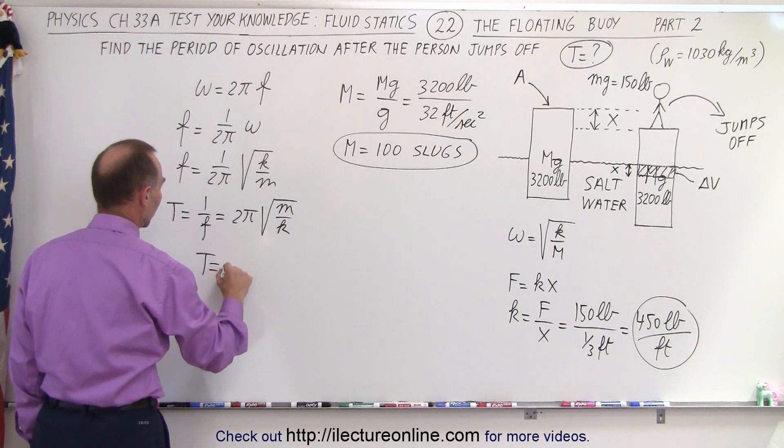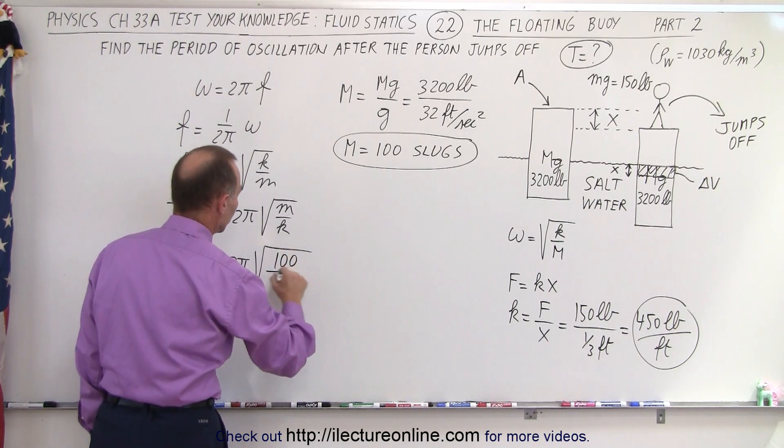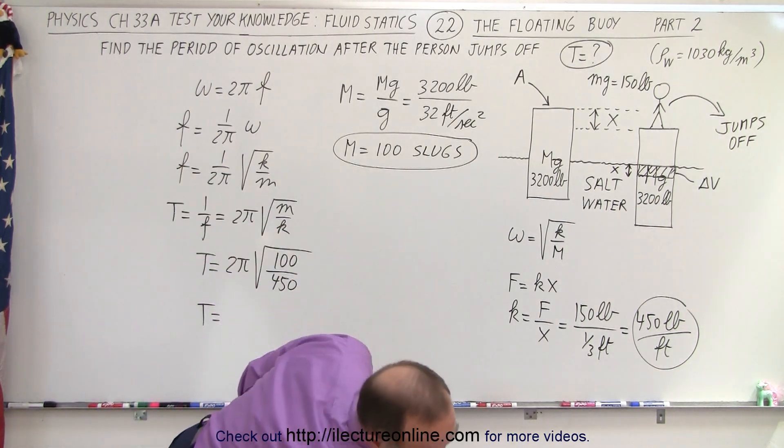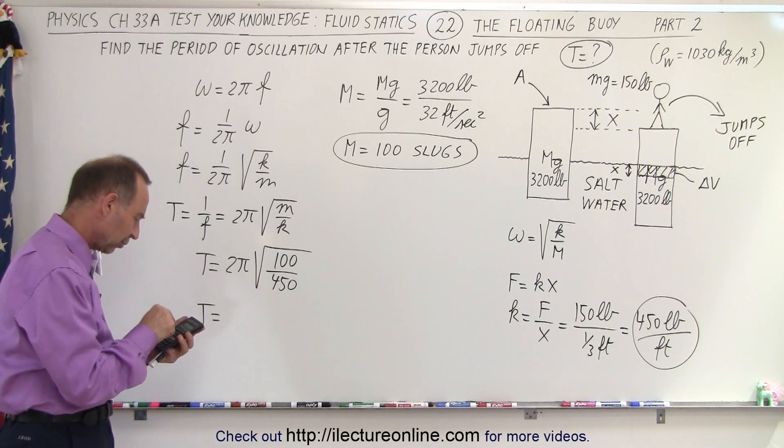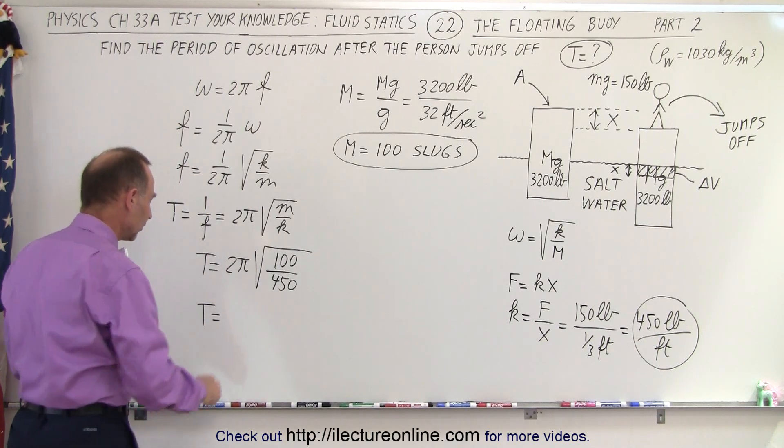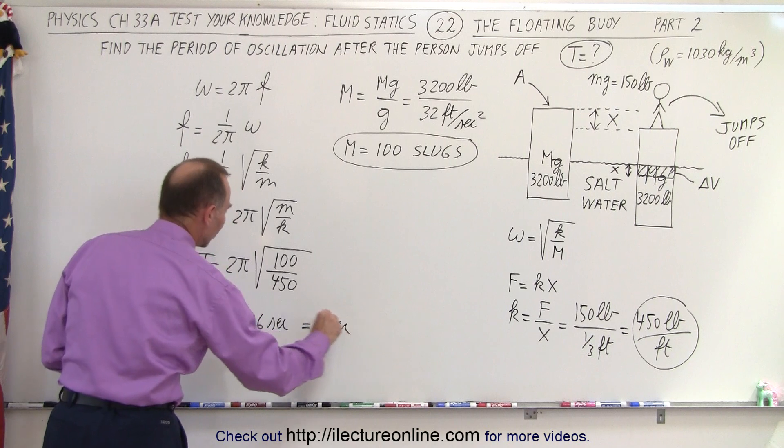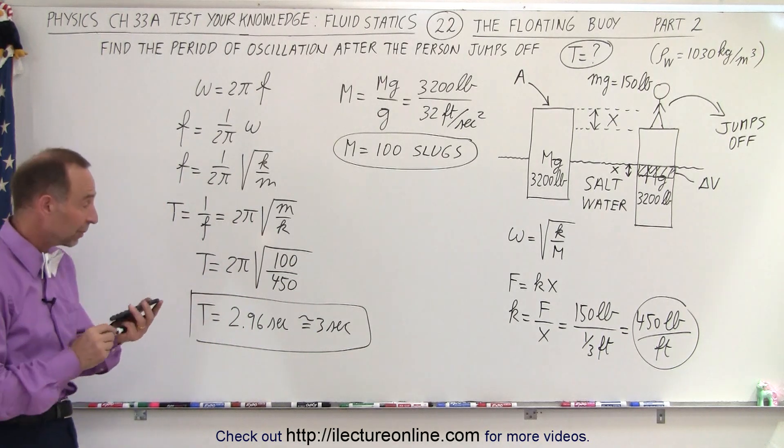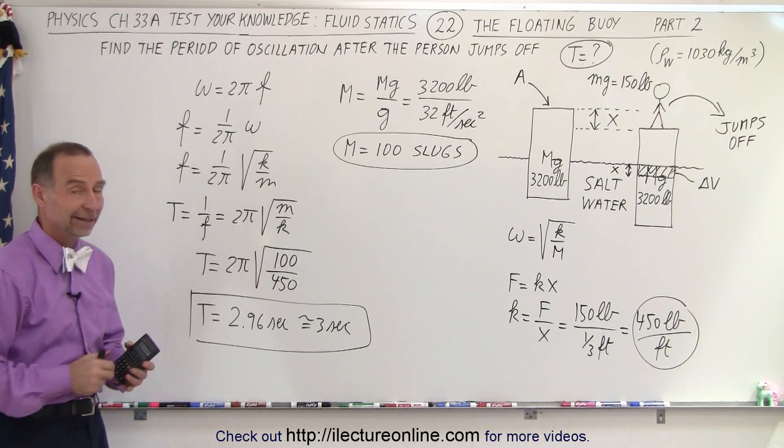All we have to do here is plug in the numbers, which is 2π times the square root of the mass. The mass would be 100 and k would be 450. So the period is—now we need a calculator—so we have 100 divided by 450, take the square root, times 2, times π, equals about 2.96 seconds. So that's approximately three seconds, which will be the period of oscillation of that buoy after a person jumps off. And that is how we do that.